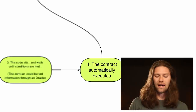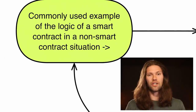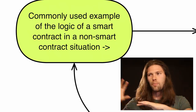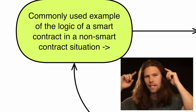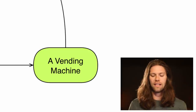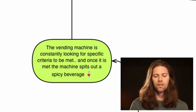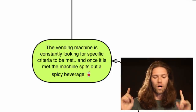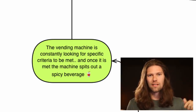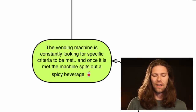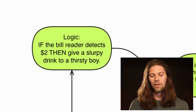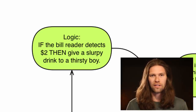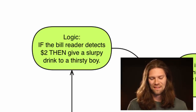A commonly used example of this logic is a vending machine. The vending machine is constantly looking for specific criteria to be met, and once that criteria is met, it spits out a beverage. The logic is: if the bill reader detects $2, then it gives a drink to the customer.